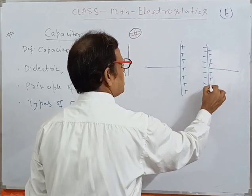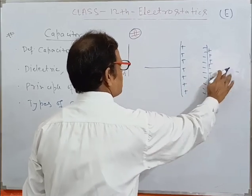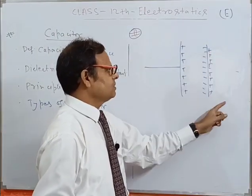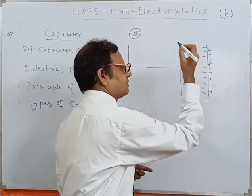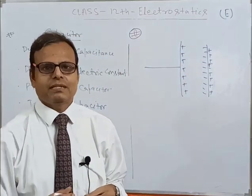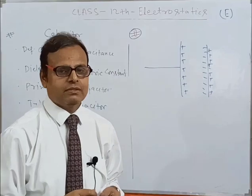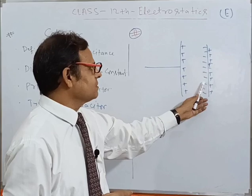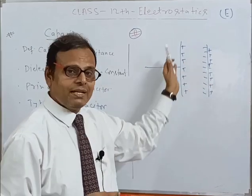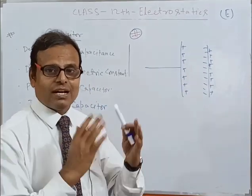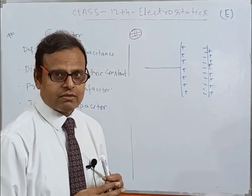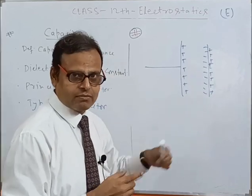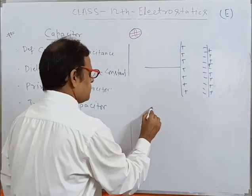Due to induction, the inner side of the second plate becomes negative, and to maintain the total charge constant, positive charge comes on the outer surface. So C equals Q divided by V.